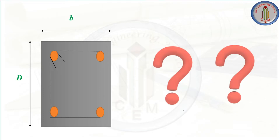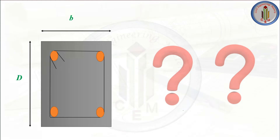The question comes: what is the size of the column? For example, if it is a G+1 building, what is the size of the column we need to provide? If it is a G+3 building, what is the size of the column we need to provide? We cannot simply say that for a G+1 building this is the standard size, or for a G+2 building this is the standard size.